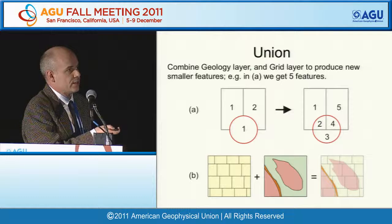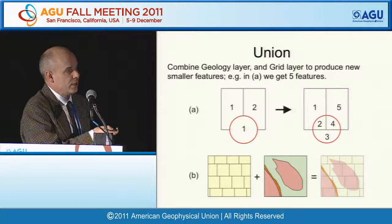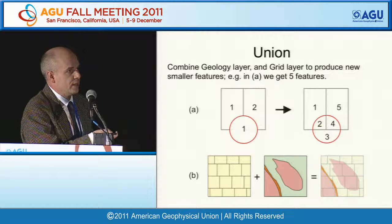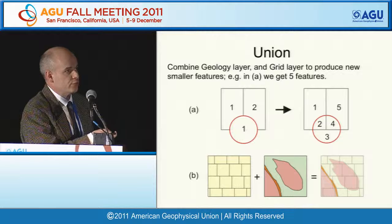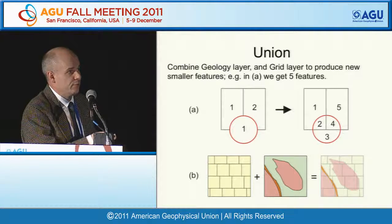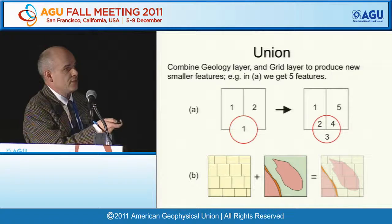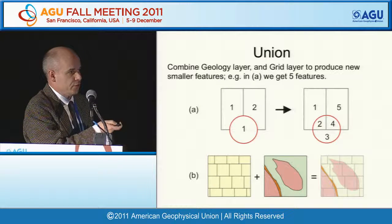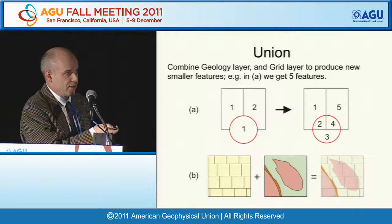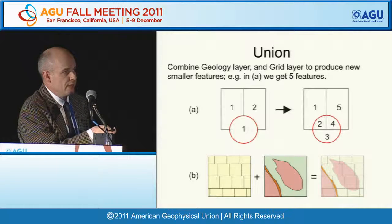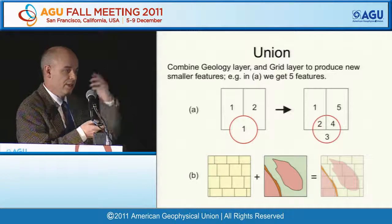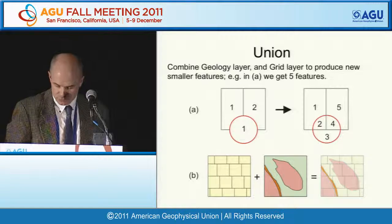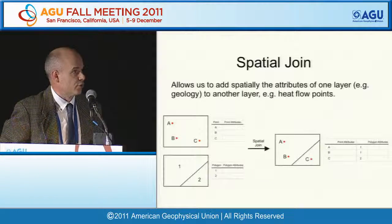We combined two grids—a geology grid and the equal area grid. Taking a simple example with two rectangles, the union process breaks this down into five features, and the union of the geology together with the grid gives something like this—reducing the clustering effect.